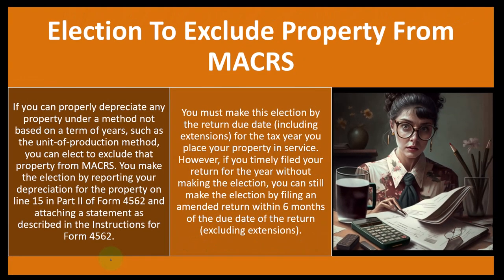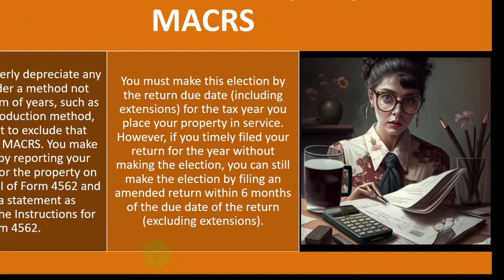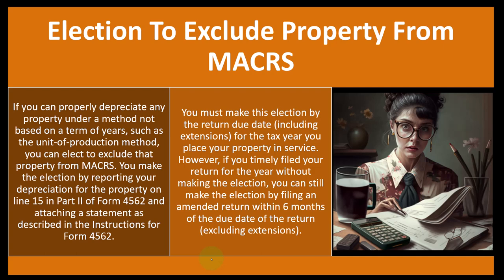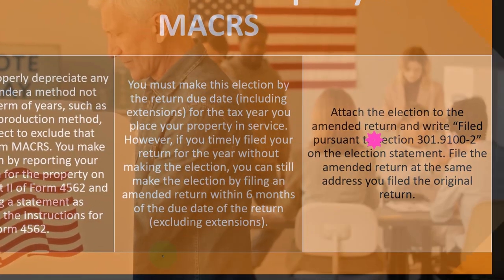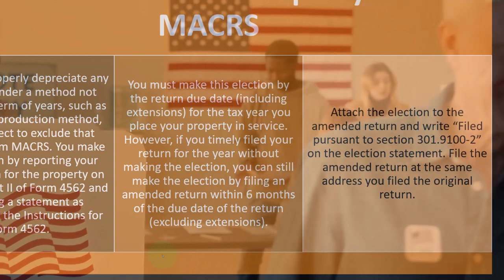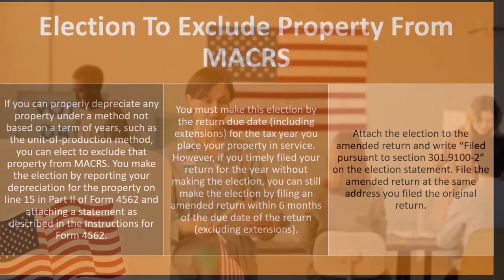That's more of an unusual situation, but could come up in certain circumstances. You must make this election by the return due date, including extensions, for the tax year you place your property in service. However, if you timely filed your return without making the election, you can still make the election by filing an amended return within six months of the due date of the return, excluding extensions. Attach the election to the amended return and write 'filed pursuant to section 301.9100-2' on the election statement. File the amended return at the same address you filed the original return.